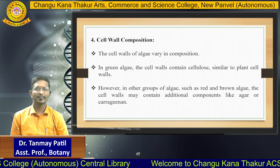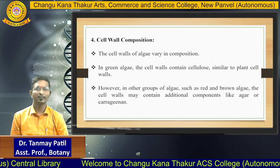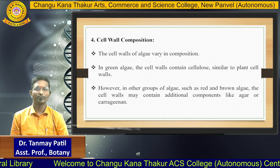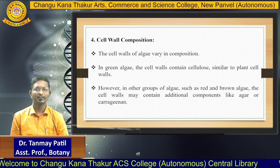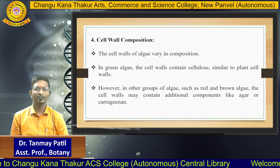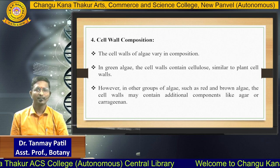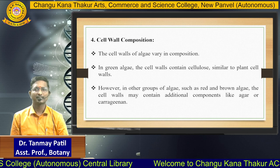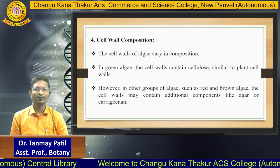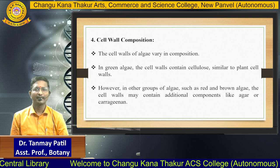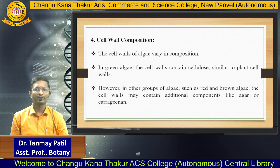The next characteristic is cell wall composition of algae. The cell wall of algae varies in composition. In green algae, the cell wall contains cellulose, similar to the plant cell wall. However, in some groups of algae such as red or brown algae, the cell wall may contain additional components like agar or carrageenan.